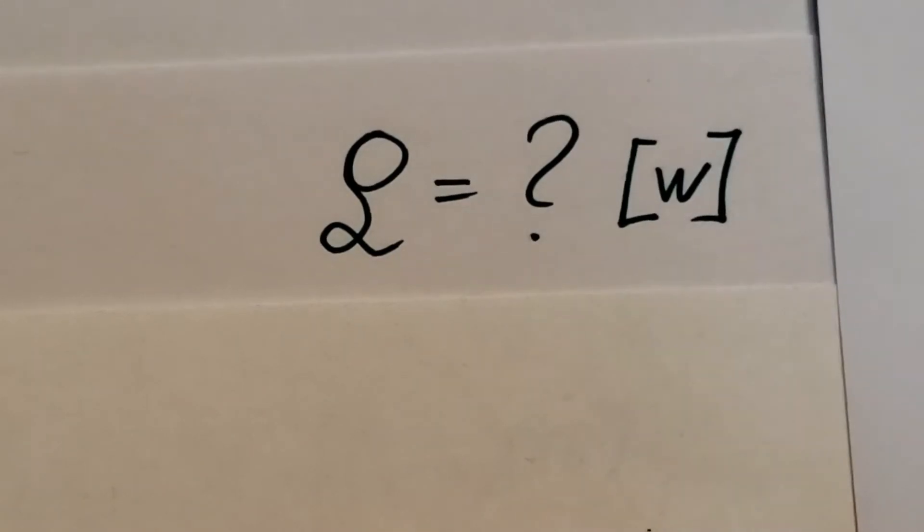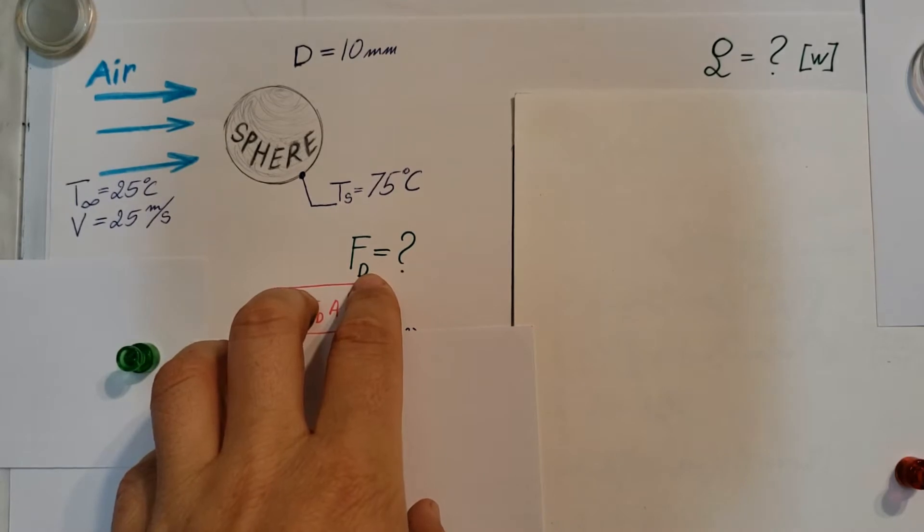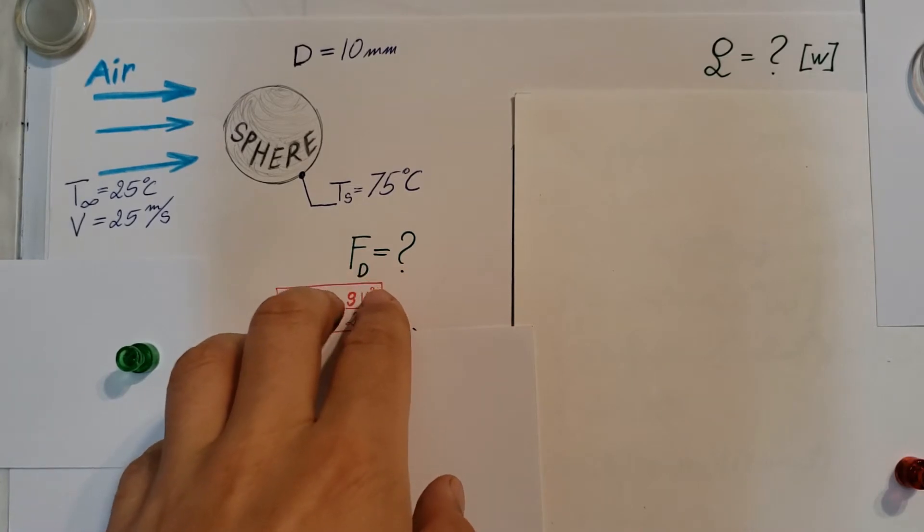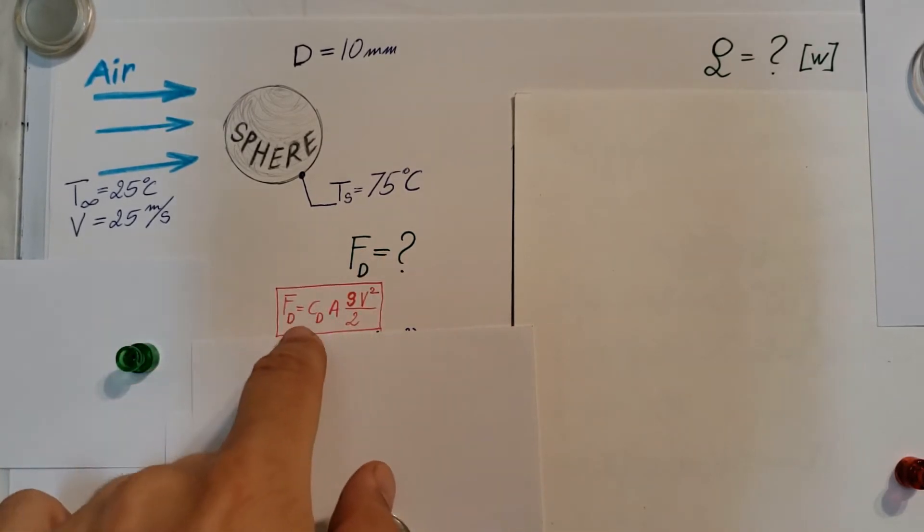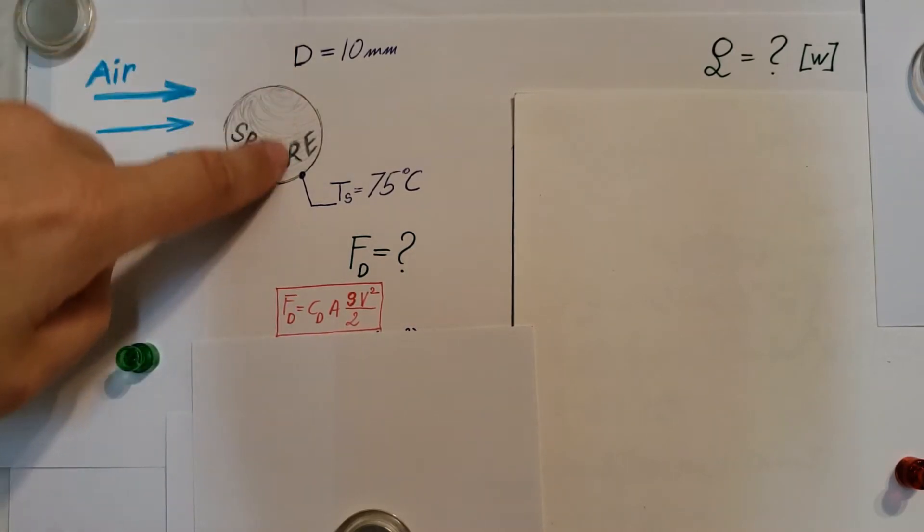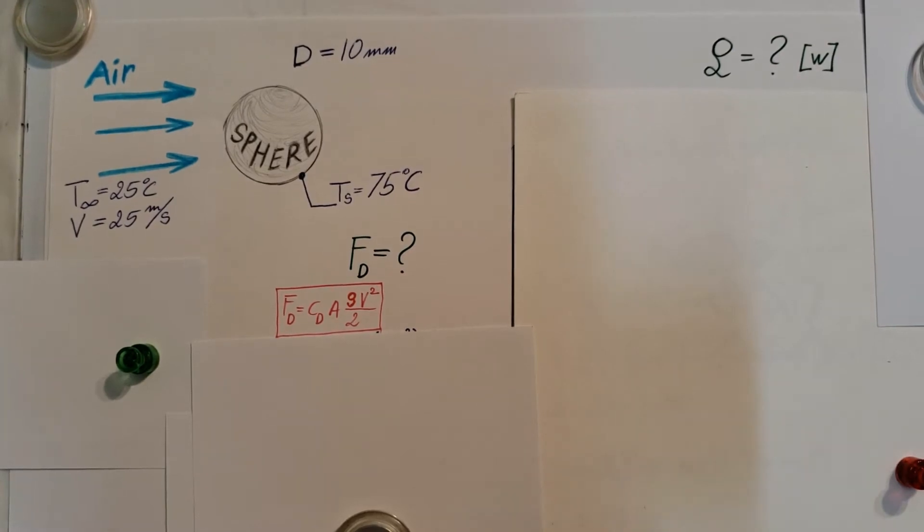They want us to find the drag force on this sphere and the heat transfer rate from the sphere. To start off and find our drag force, we're going to make a connection back to our knowledge from fluid mechanics. This formula comes from there where we have the drag force equals CD, the drag coefficient, times the area. The area would be the reference area here, the plane down at the center of the sphere, so basically the circle. And we have density, velocity squared over two.